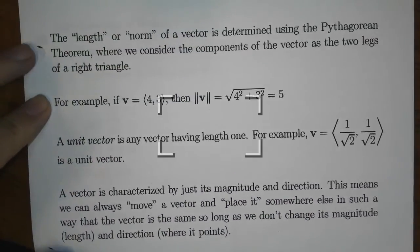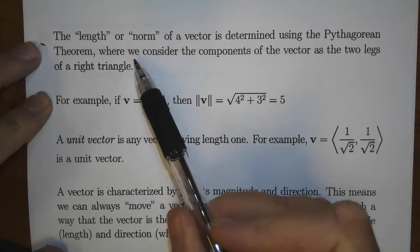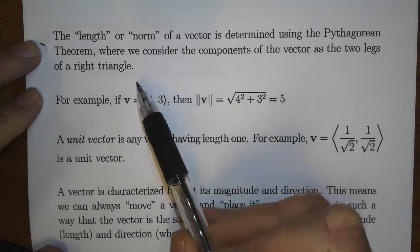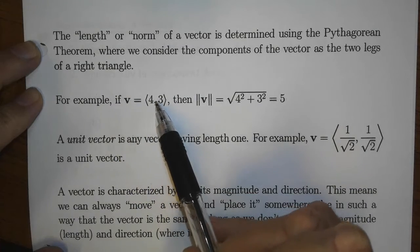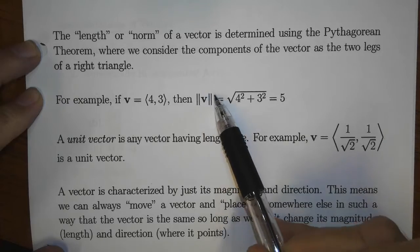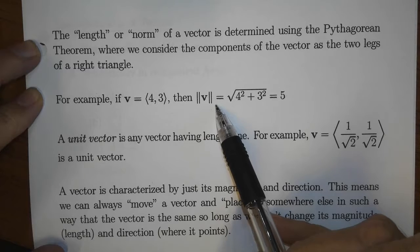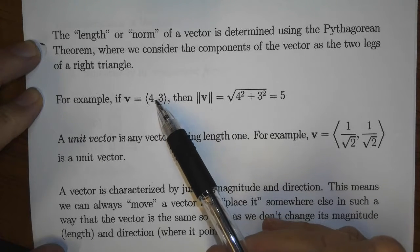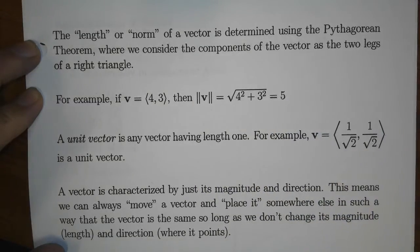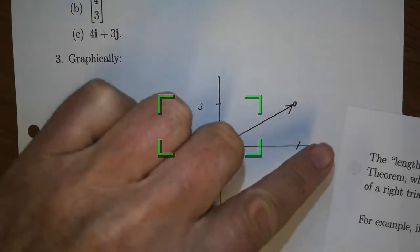The length or norm of a vector — those terms are synonymous — is determined using the Pythagorean theorem, where we consider the components of the vector as the two legs of a right triangle. For example, for the vector ⟨4, 3⟩, the magnitude or norm (sometimes indicated using absolute value signs or double absolute value signs) is computed by taking the square of the first component, the square of the second component, adding them together, and taking the square root. That gives us 5, so the length of this vector is 5.